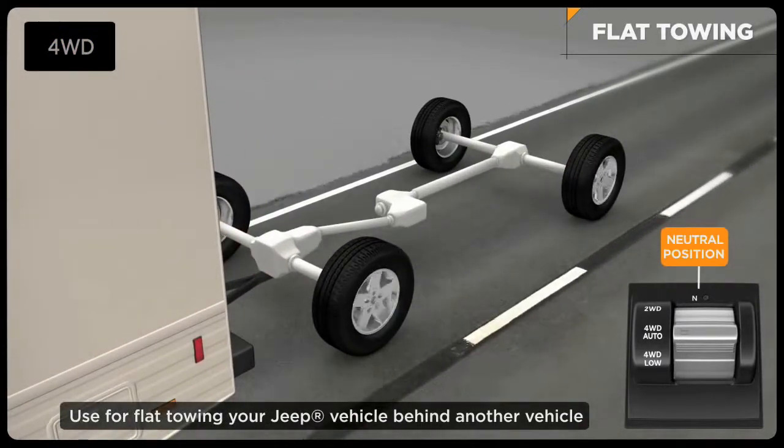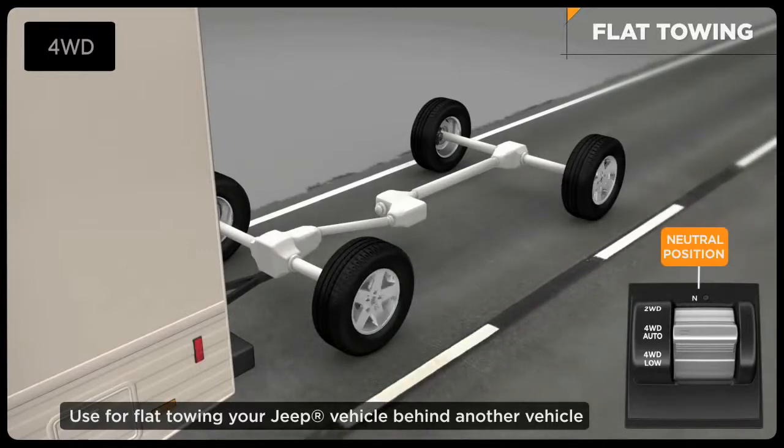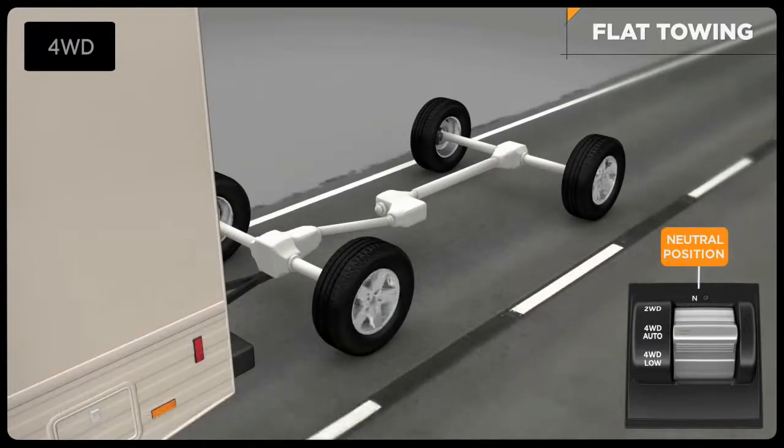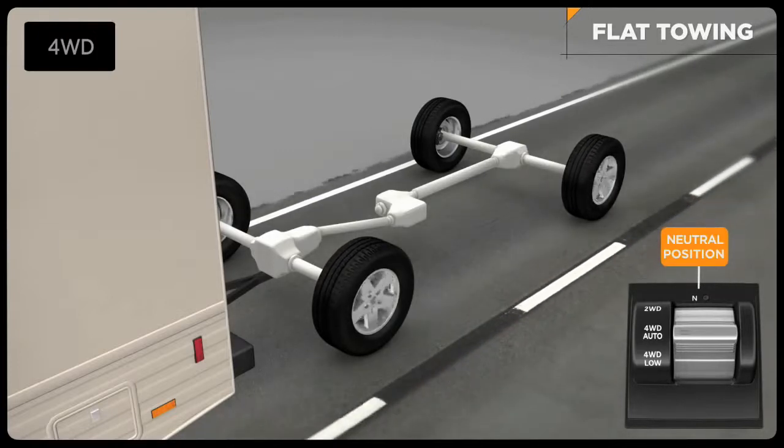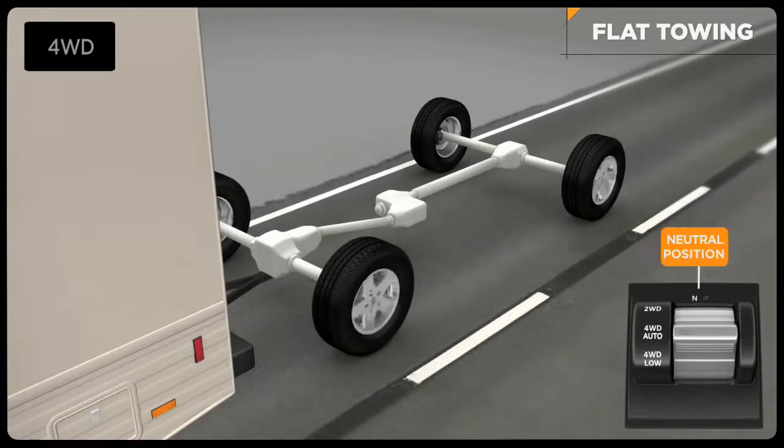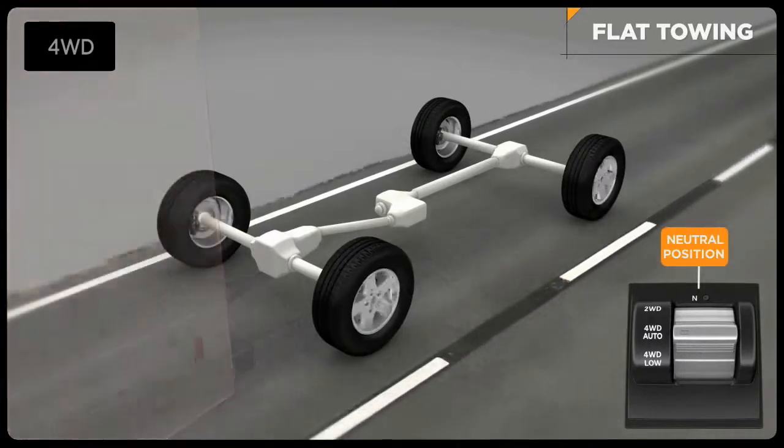To engage, turn the ignition to the on position without starting the engine, place the transmission to neutral, depress the brake pedal, and push the gray pin labeled on the 4x4 shift switch. Please refer to your owner's manual for full instructions and detailed information.